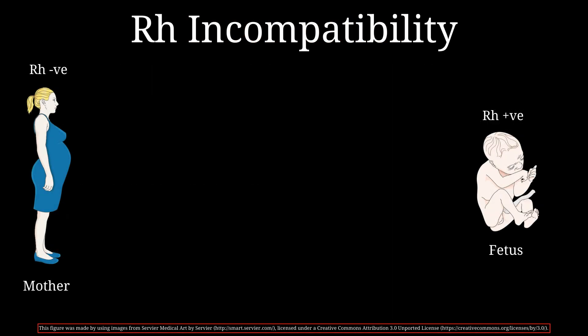Erythroblastosis fetalis can result from RH incompatibility between the mother and her fetus. This incompatibility can develop when a woman with RH negative blood is impregnated with a man with RH positive blood, and she goes on to have a fetus with RH positive blood.